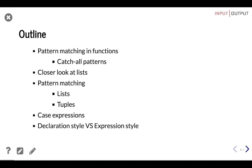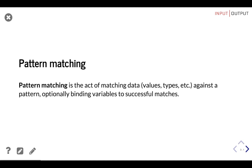Let's start with pattern matching. Pattern matching is the act of matching data values, types, etc. against a pattern, optionally binding variables to successful matches. We're going to discuss pattern matching in three different scenarios: function definitions, lists, and tuples. It sounds complicated, but it's pretty intuitive when you get the hang of it.